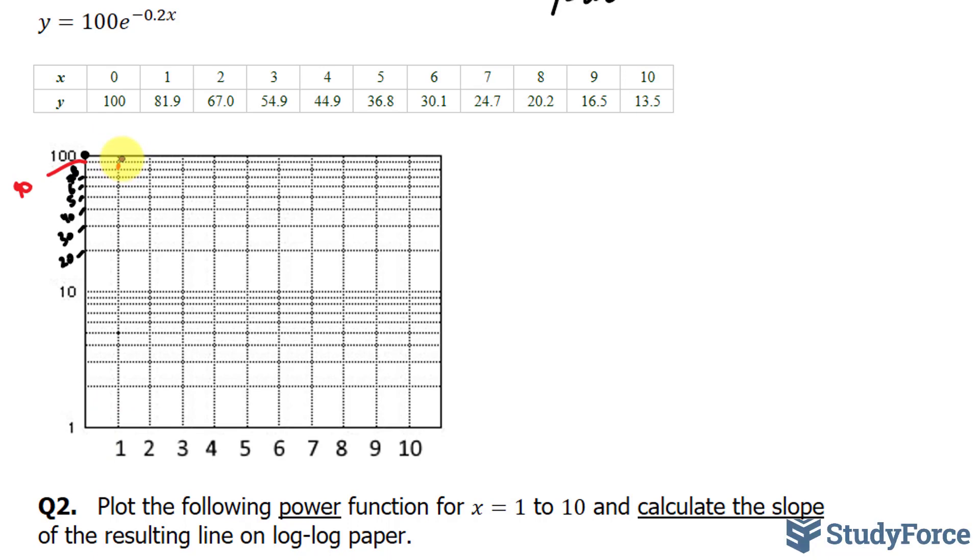Our next point is 2 and 67. 2 and 67 will be between 60 and 70. So around here. 3 and 54.9. That's around here. 4 and around 45 is here. Instead of wasting your time showing you how to plot the rest, here's what it should look like.